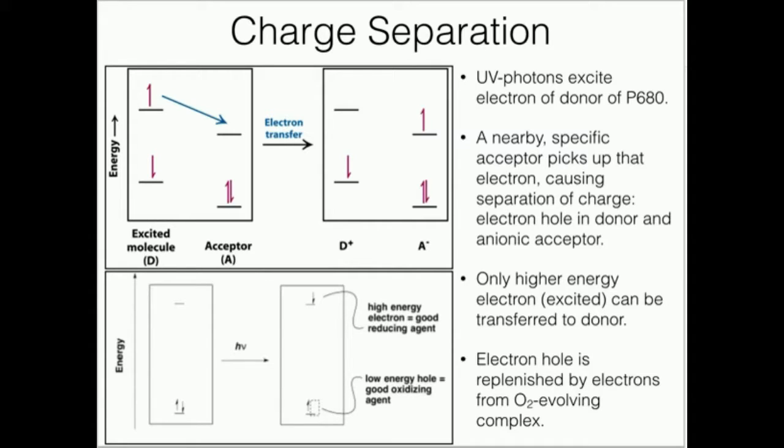So these electrons, in these spaces where they are, are going to behave very differently. So this state right here, once we have UV photons exciting this electron, this is what we have here. So this is our donor. This is our special pair right here. And this is the acceptor.